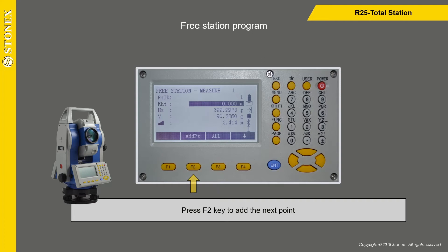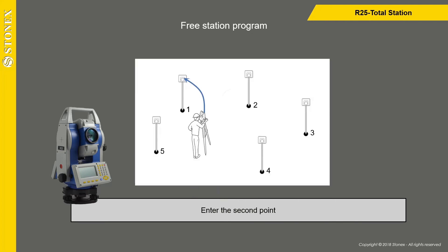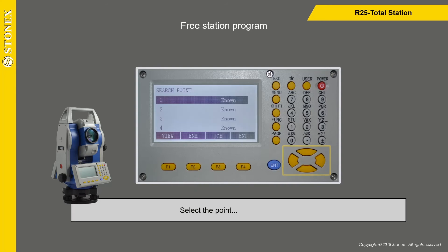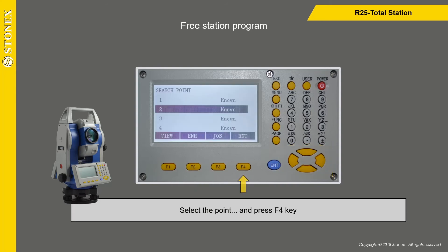Press F2 key to add the next point and enter the second point. As an alternative to manual input, it is possible to choose points from memory. Press F1 key to confirm the distance check, select the point, and press F4 key.